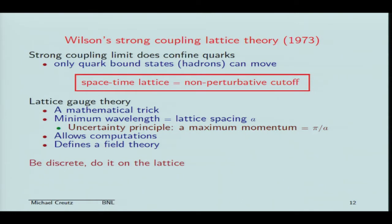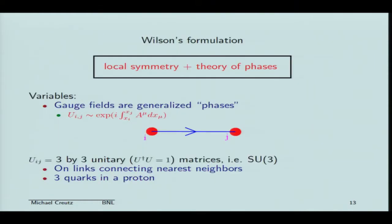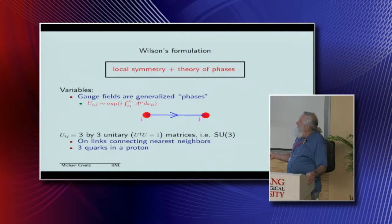So we should be discrete and do it on a lattice. The nice thing about giving old talks is you can use old jokes — on the other hand, there are a lot of people that say you should be indiscreet and do it continuously. But Wilson's formulation is actually very elegant. It incorporates directly the very nice properties of gauge theories. First of all, it maintains a local symmetry. And it also writes the theory as a theory of phases — as a particle moves around in a gauge field, its wave function will take up a phase. The idea is that when a quark hops from one site to another, its wave function will pick up a phase.